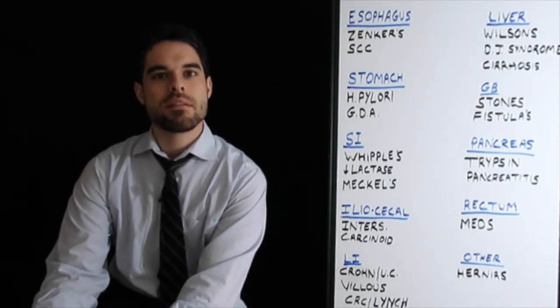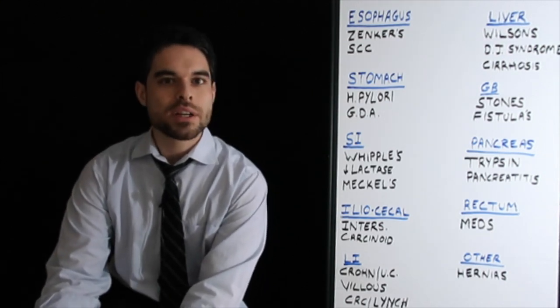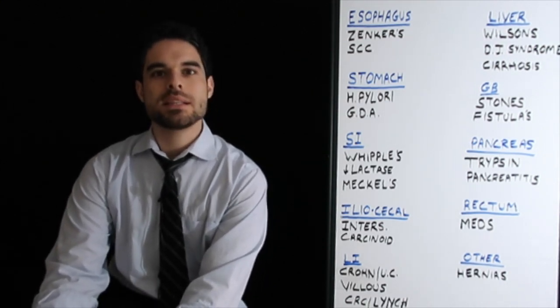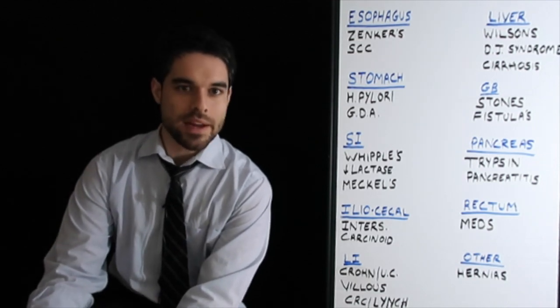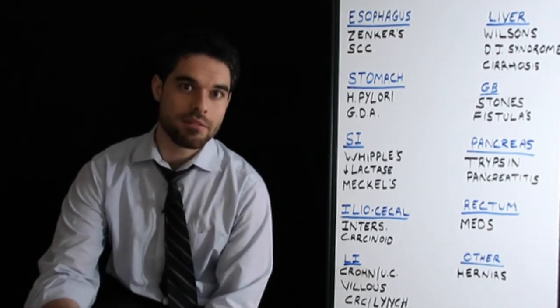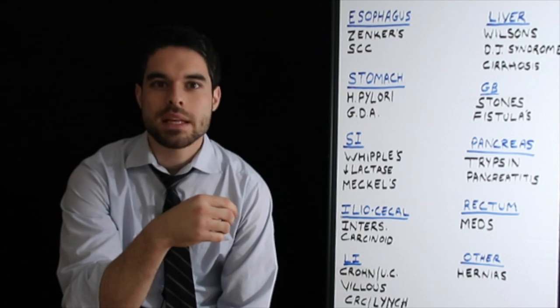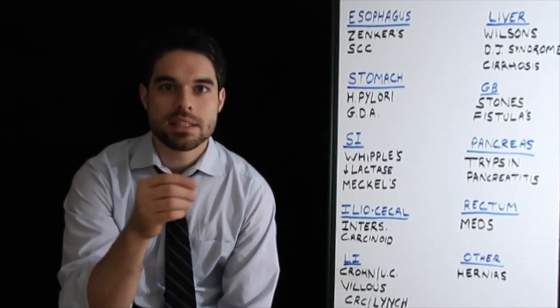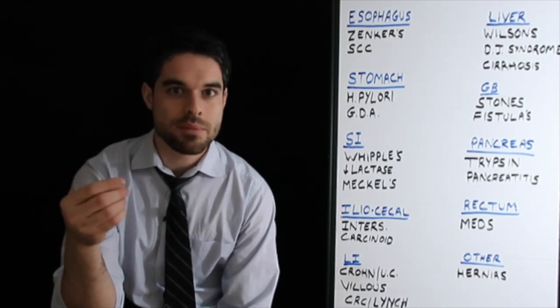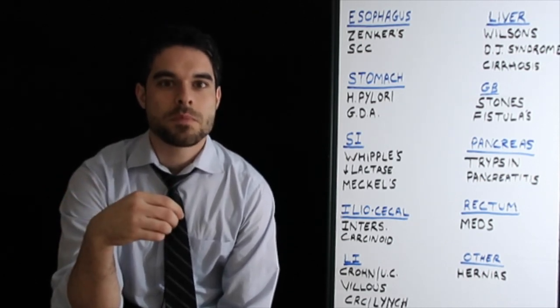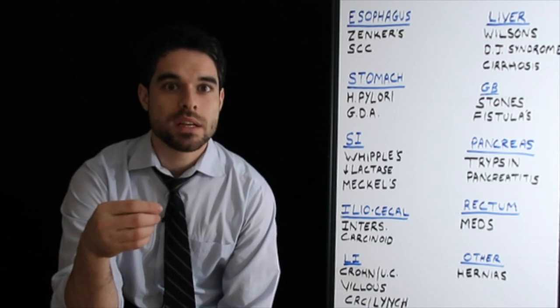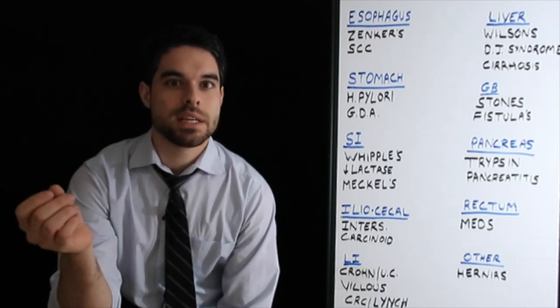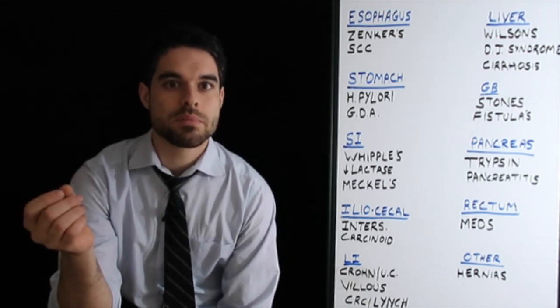You can also have a lactase deficiency. A point I want to make here is that lactase is located in the tips of the villi. So anytime that you have an insult to the GI system, like if you have a viral gastroenteritis, you can have a lactase deficiency like a temporary one. And if you look down under a microscope, you wouldn't actually see anything wrong. It would look completely normal.